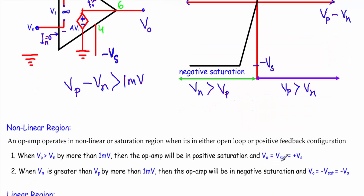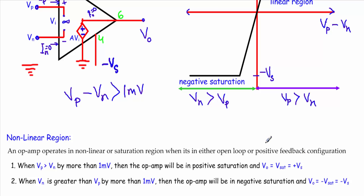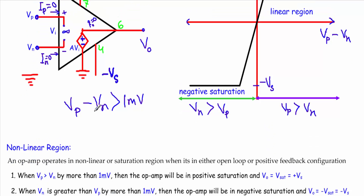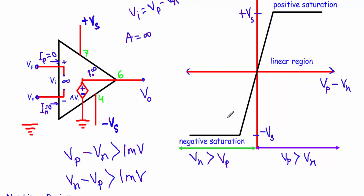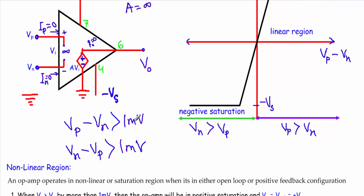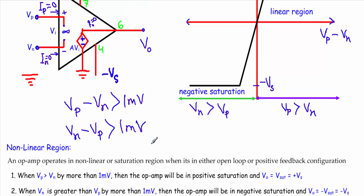The output voltage Vo equals Vsat, which equals plus Vs. In the negative saturation region, when Vn is greater than VP by an amount of more than one millivolt — that is, Vn minus VP is greater than one millivolt — then the operational amplifier will operate in the negative saturation region. So in positive saturation VP is greater than Vn, and in negative saturation Vn is greater than VP by more than one millivolt.